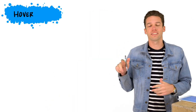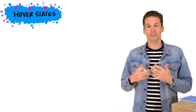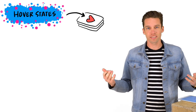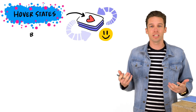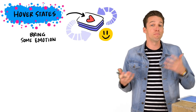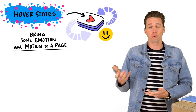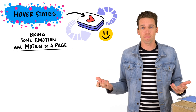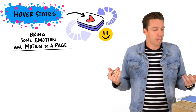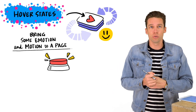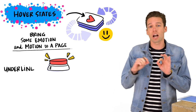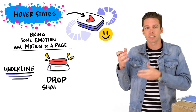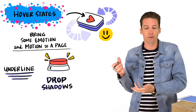Number two is the delightful world of hover states. Think of it as an opportunity to bring some emotion and some motion to your event page. Examples could include on a button — maybe it's just a slick underline or maybe it's a nice drop shadow.